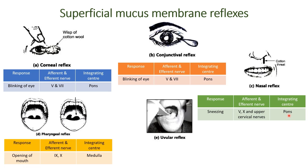The next one is the pharyngeal reflex. We'll touch each side of the pharynx lightly with a wooden spatula. The response is that the individual opens the mouth more widely. The afferent and efferent nerves involved are the ninth and tenth cranial nerves, and the integrating center is the medulla.